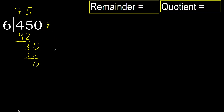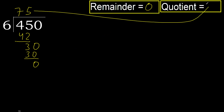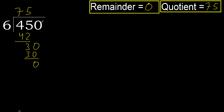That is not a number, therefore finish it. 450 divided by 6 is 75.